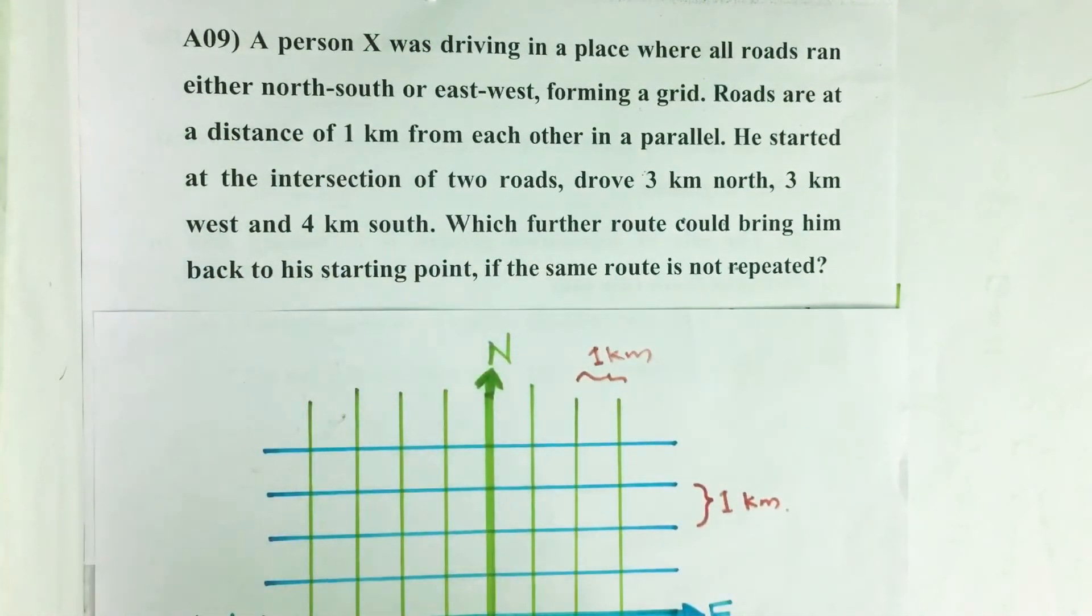Hello everyone, here I am going to solve 2016 CBSE question number 9 from question paper series A. A person X was driving in a place where all roads ran either north-south or east-west, forming a grid.